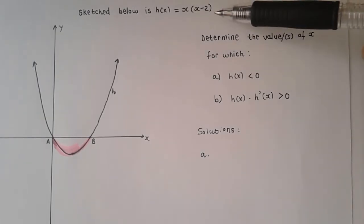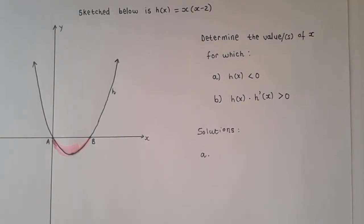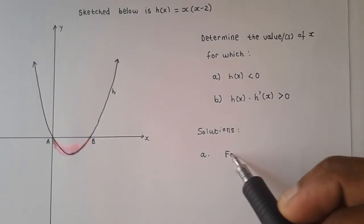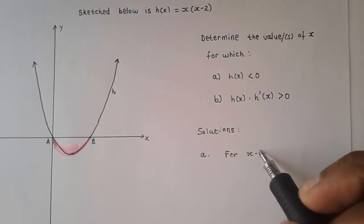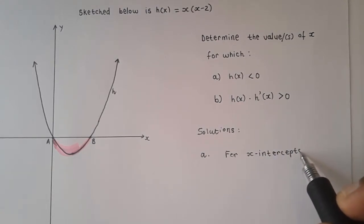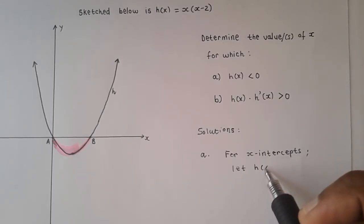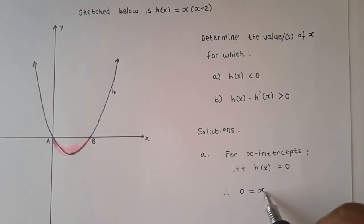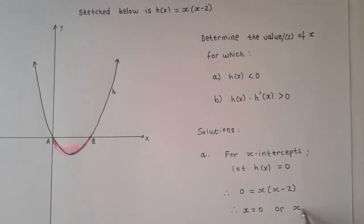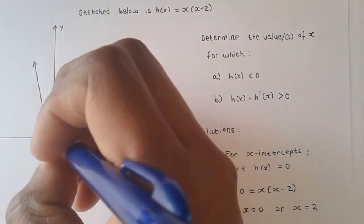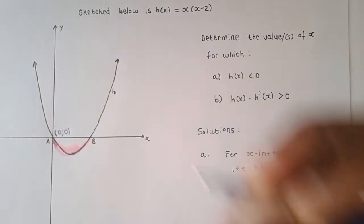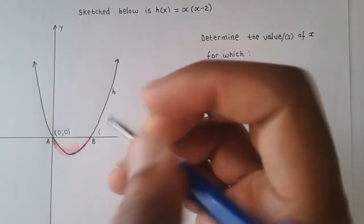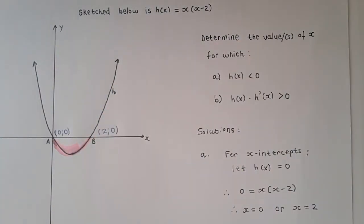They've given you the equation of h of x. To start off, the first thing you do is find the x-intercepts. For x-intercepts, let h of x equal 0. Therefore, 0 equals x times x minus 2, which gives us an x-intercept at 0 and another x-intercept at 2. So now you can say this coordinate here is (0, 0), because that's the origin, and that coordinate there is (2, 0).